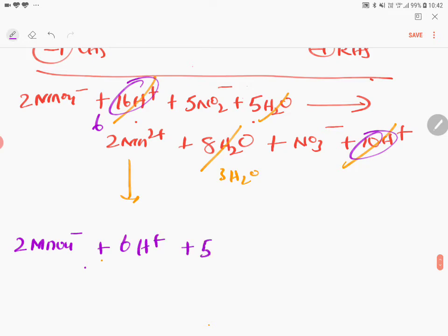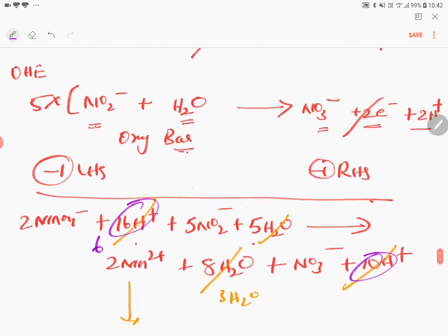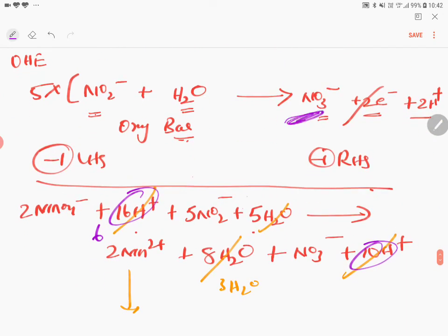Plus 5 NO2 minus giving you 2 Mn2 plus plus 3 H2O. So here also I made one more mistake. See here, nitrate. 5 into NO3, you should get to 5 NO3. I wrote only NO3. Once again apologize me. 5 NO3.